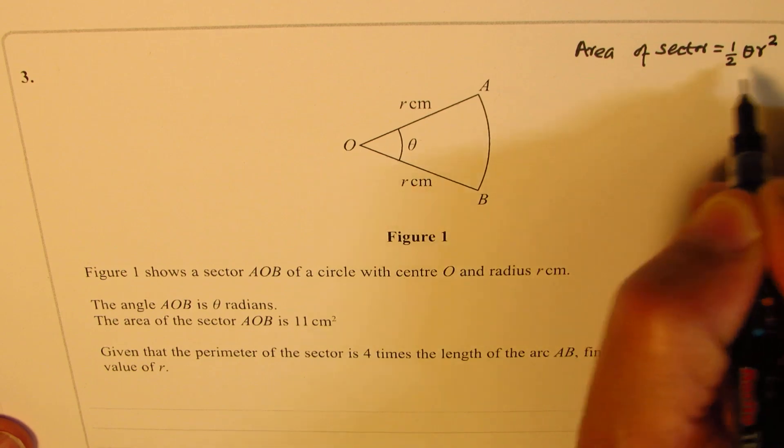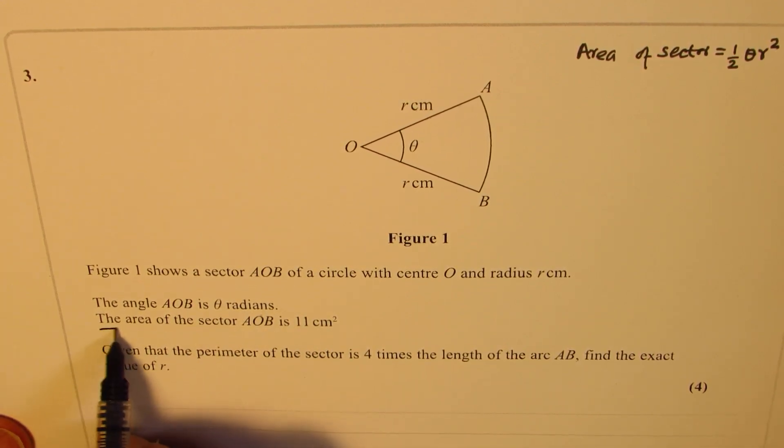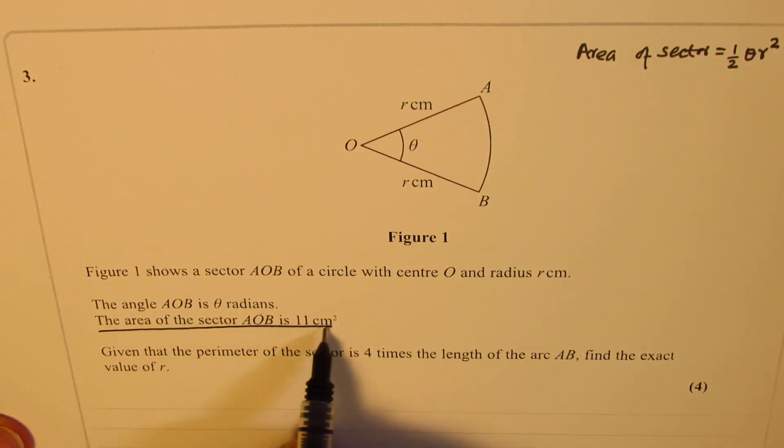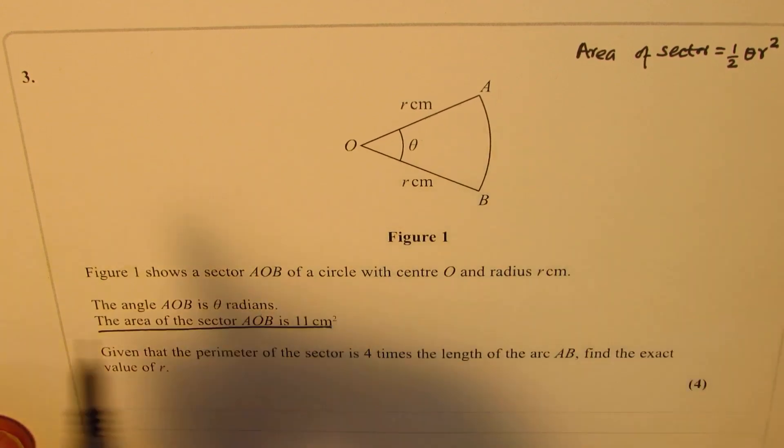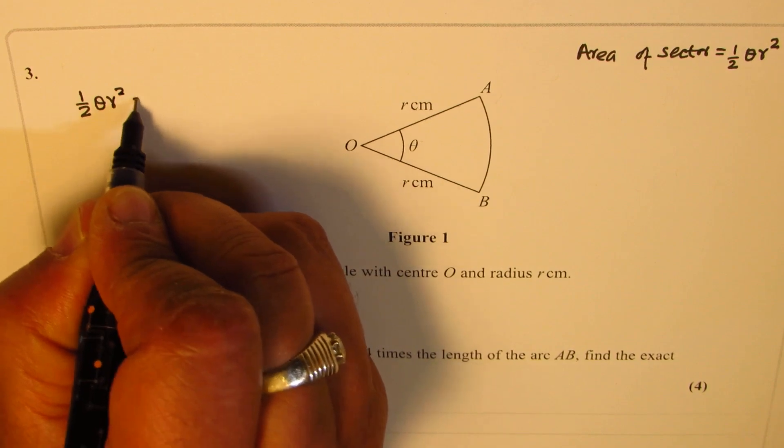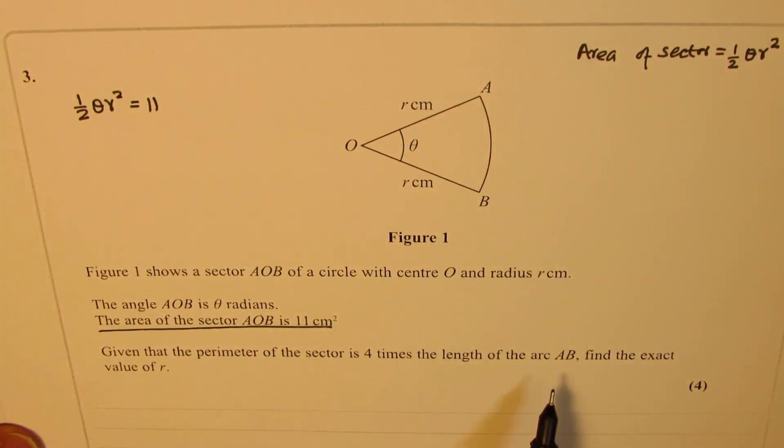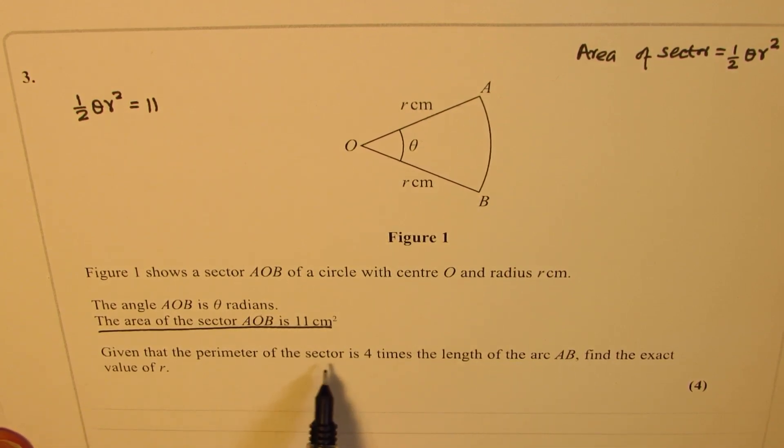So we know area of the sector, it is given to us as equal to 11 centimeters squared. So we can write down this equation: half theta r squared is equal to 11. Now another thing which is given to us is that the perimeter of the sector is four times length of the arc AB.